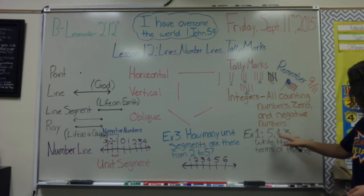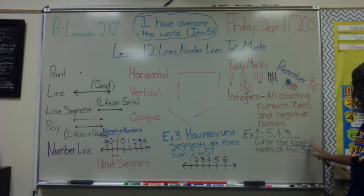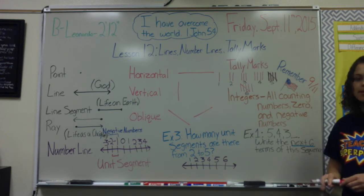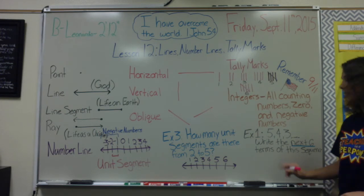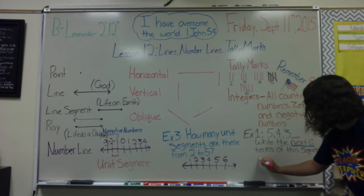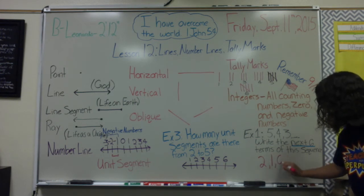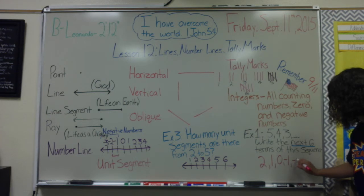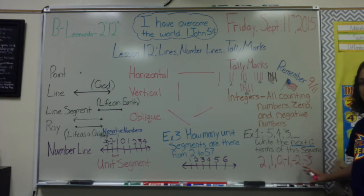Example one gives a number sequence counting by ones: five, four, three. I need to write the next six terms of this sequence. The next six terms would be: two, one, zero, then after zero I go to negative one, negative two, negative three. So those are my next six terms of the number sequence.